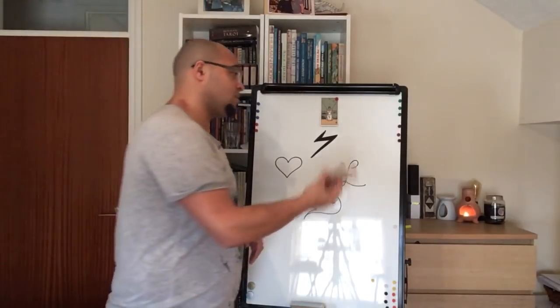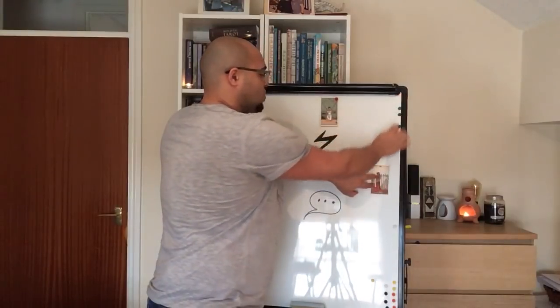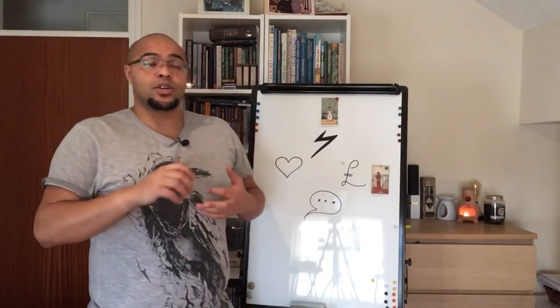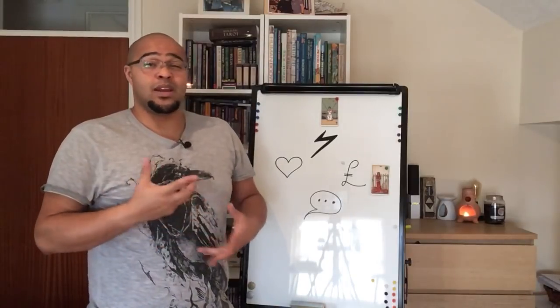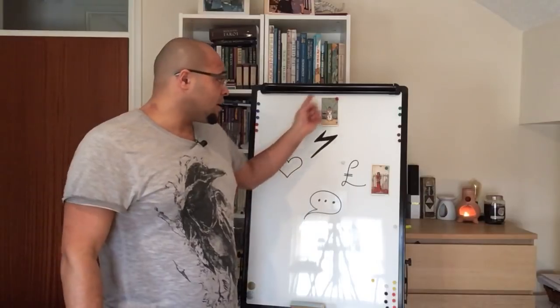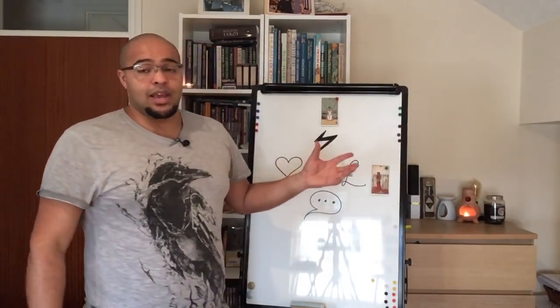So you've got that Eight of Swords. This is not a great card. I have to be honest with you because it represents constriction, restriction, constriction. It can represent imprisonment, entrapment, all of those things. Now, I want to say to you, you've got a lot of Swords energy here.